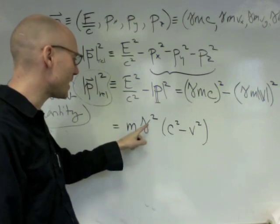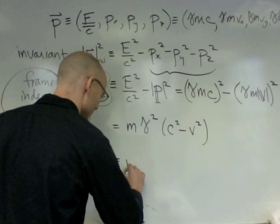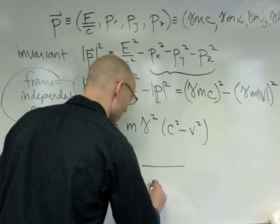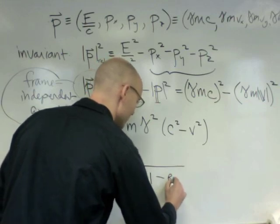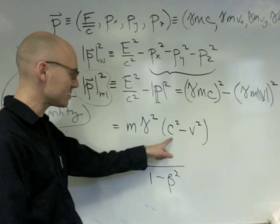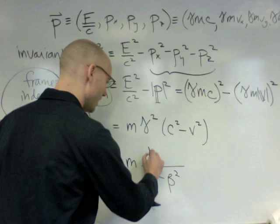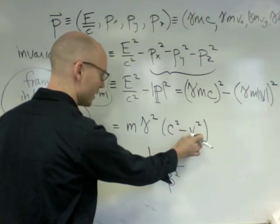So, I'm going to write everything in terms of betas now. This will become m. This gamma squared now becomes a 1 over 1 minus beta squared. And now I want to write this in terms of betas too. So, I'm going to divide by c squared. So, this will become a 1.